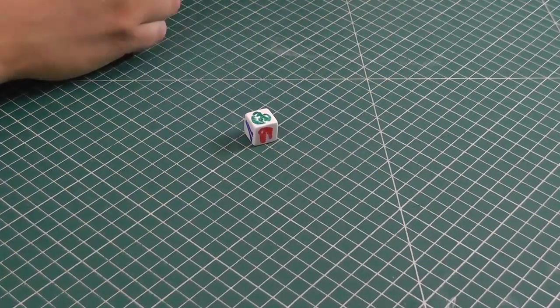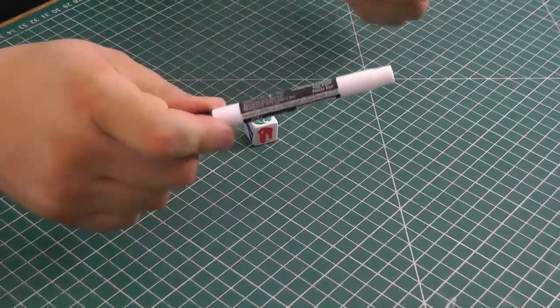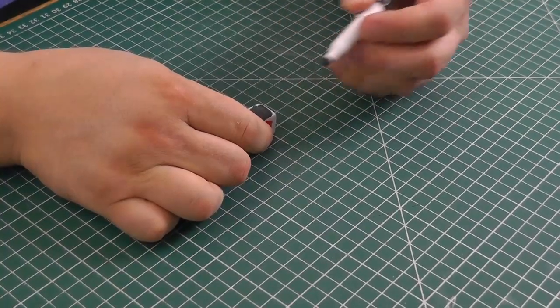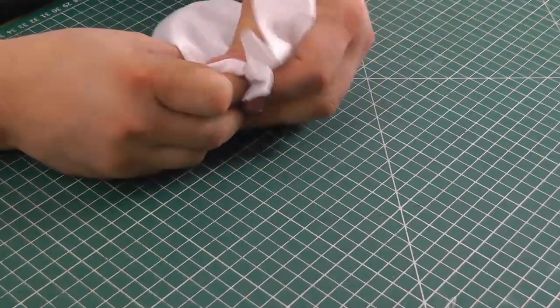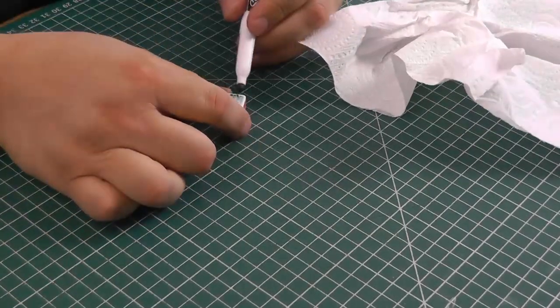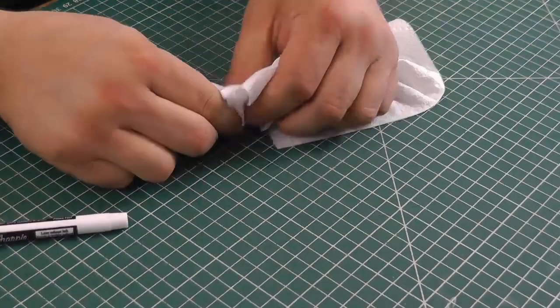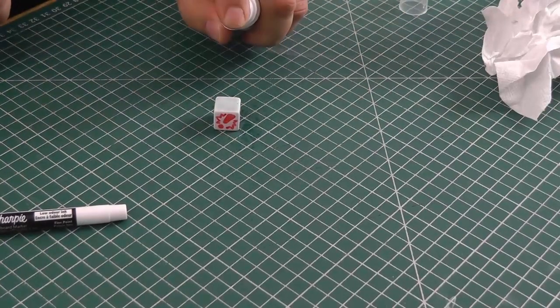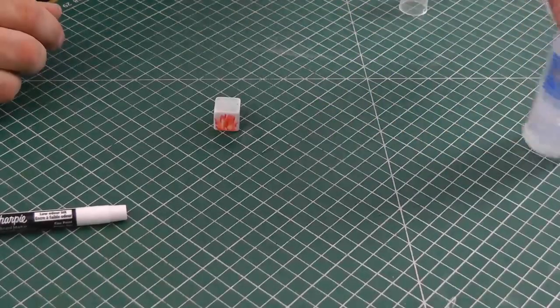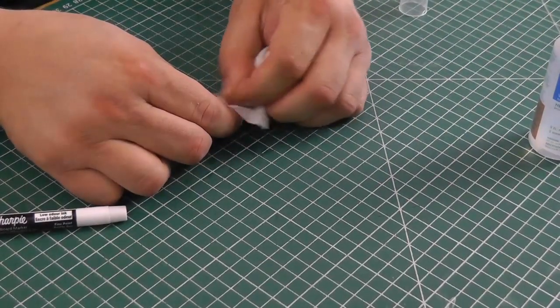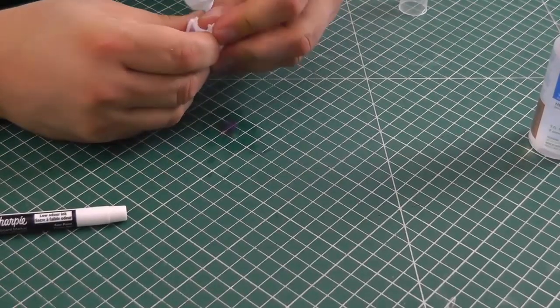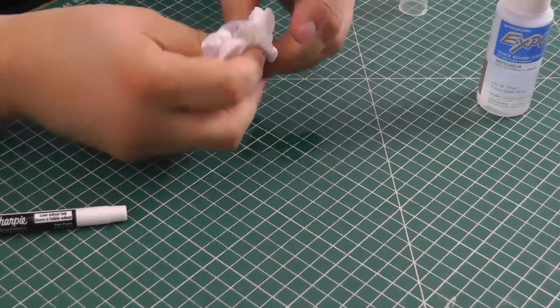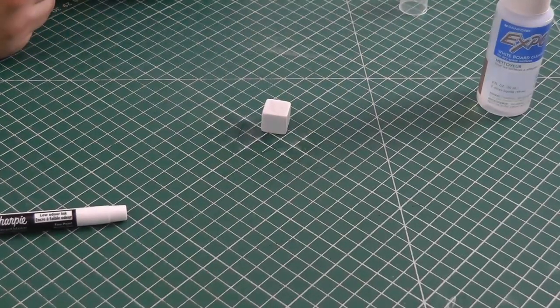The extra bonus trick here is that if you take a whiteboard marker and scribble over some permanent marker on a glossy surface like this, then you can wipe away the permanent marker. It essentially lifts the ink off the surface. If there's still some color left, you can spray some alcohol, such as whiteboard cleaner, and it will help clean it off. You're left with a cube that you can reuse for another game in the future.